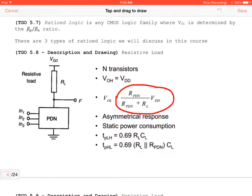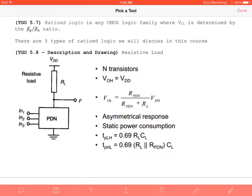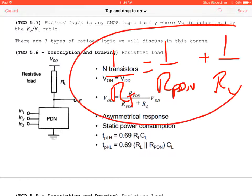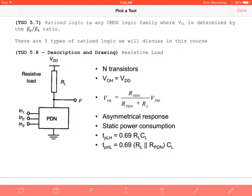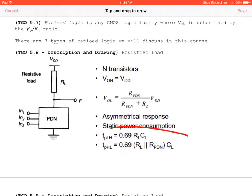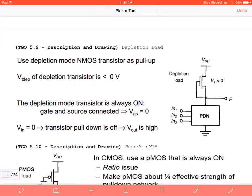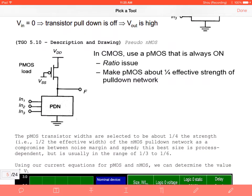For ratioed logic, the pull-down network is in parallel, so: 1/R_total = 1/R_PDN + 1/R_L. We derived the equation from there and proved the 0.69 factor — this 0.69·R·C gives the time delay, representing the static power consumption and delay for a capacitive load. We also learned about depletion load, where the output is tied to the gate with a PMOS, and then about pseudo NMOS.